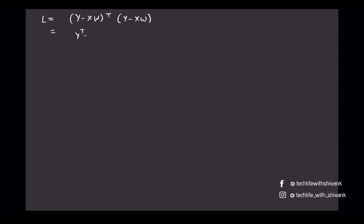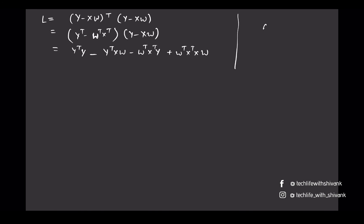We will write this expression in the form of matrix multiplications. To derive this we use the formula that (a + b) transpose equals a transpose plus b transpose, and (a·b) transpose equals b transpose times a transpose.